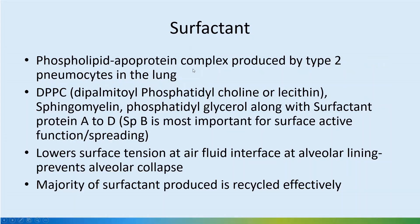Surfactant is a phospholipid-apoprotein complex produced by type 2 pneumocytes in the lung. It mainly contains dipalmitoyl phosphatidylcholine (lecithin), sphingomyelin, and phosphatidylglycerol, as well as surfactant proteins A to D. Surfactant protein B (SPB) is the most important protein component, which allows the surface-active spread of surfactant.